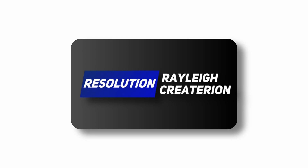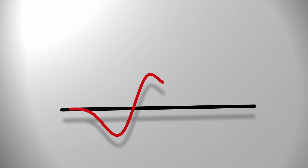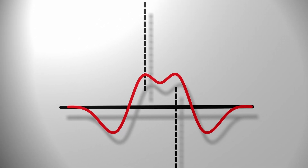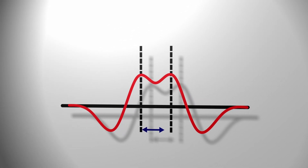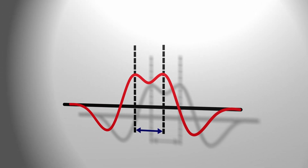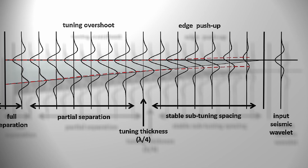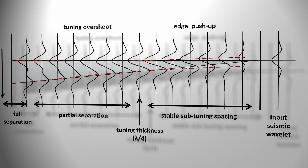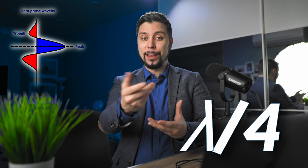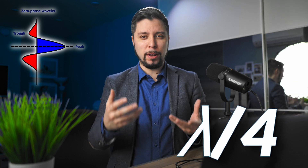The Rayleigh criterion is a principle used to determine the minimal thickness of a subsurface layer that can be distinguished or resolved using seismic data. It is based on the idea that for two subsurface reflectors to be considered separate, the diffraction patterns must be separated by at least a certain distance, known as the tuning thickness. This is equal to the minimal layer thickness for which it is possible to separate two boundaries by seismic signal. For wavelengths, the resolution limit is approximately lambda over 4, where lambda is the wavelength of the dominant frequency.